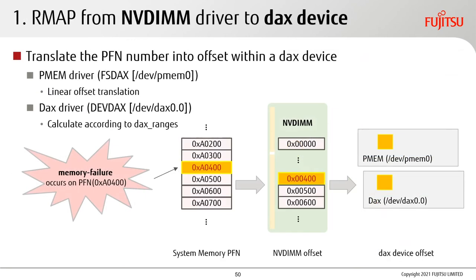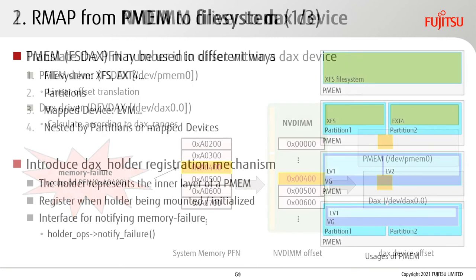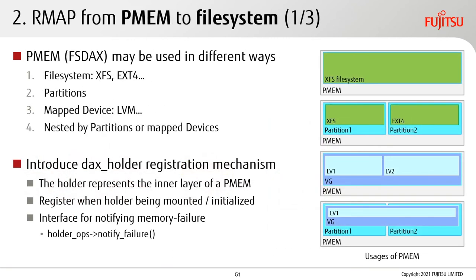Memory failure always accepts PFN as its argument — the page frame number in system memory — so we need to translate it into the offset inside NVDIMM first. According to the mode in use, the offset needs further translation by each driver. For FSDAX mode, the PMEM driver translates the offset linearly. For DAX mode, the DAX driver calculates the offset according to the DAX range property. In this session we only consider FSDAX mode.